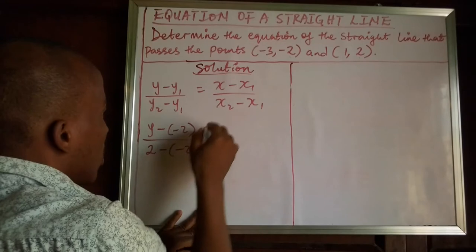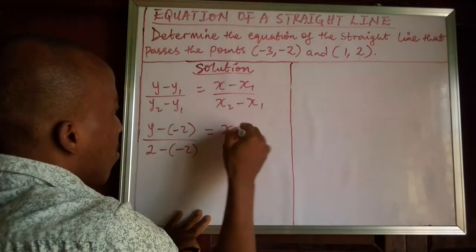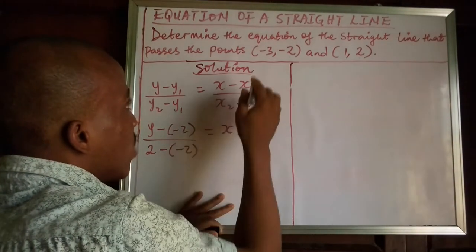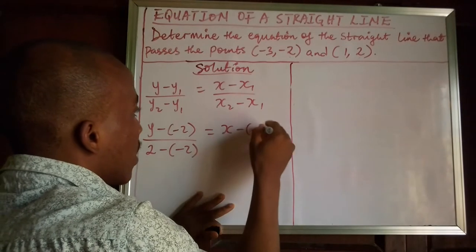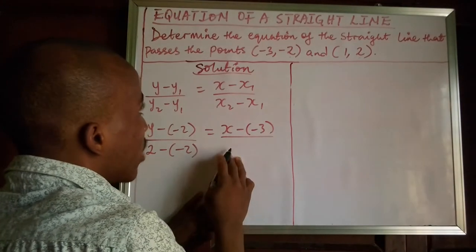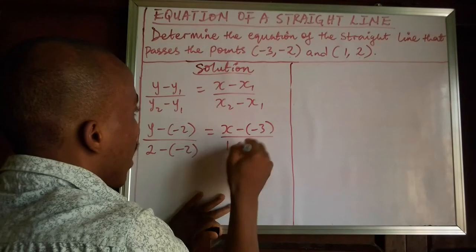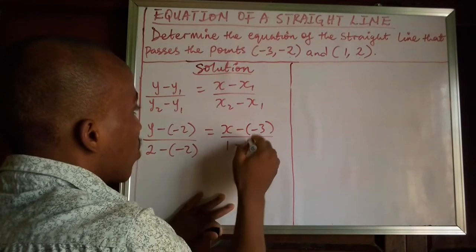This will be equal to x minus, what is x1? x1 is negative 3 over what? What is x2? x2 is 1 minus what is x1? x1 is negative 3.